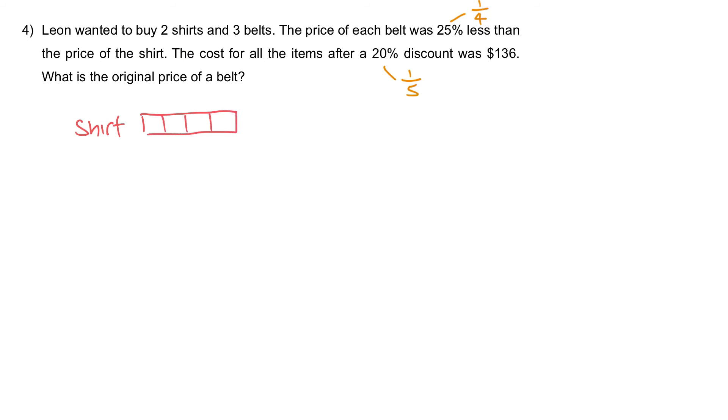And since the belt is 1 unit lesser, a quarter lesser, well, the belt will be 3 quarters. So 3 units. Let's look at the model again. Does it make sense? This is the shirt. And the belt is a quarter lesser than the shirt. So the belt will be 3 out of 4. Let's remember, all these prices are the original price. The discount have not been applied yet.